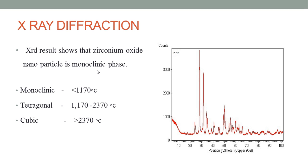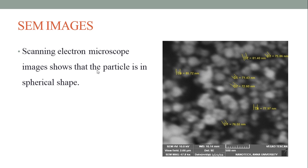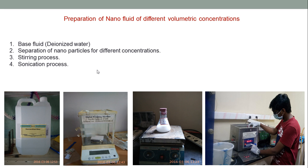Zirconium oxide has a monoclinic phase below 1170 degrees Celsius and a cubic phase below 2370 degrees Celsius. Scanning electron microscope images show that the particles are spherical in shape. For preparation of the nanofluid, we used a magnetic stirrer to disperse the nanoparticles into the base fluid, which is deionized water.